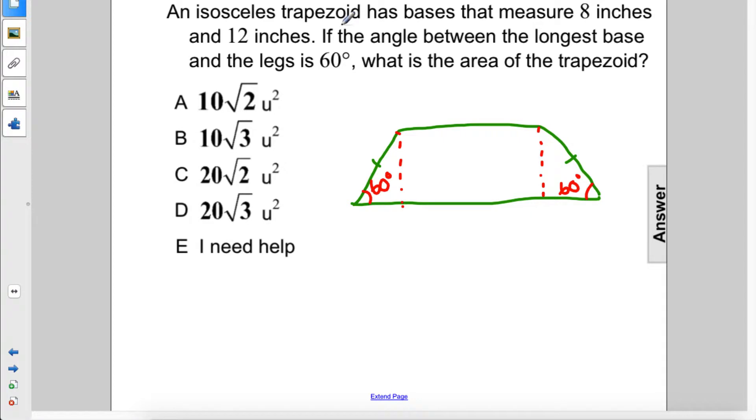Alright, so the bases are 8 and 12. This one's 8, this is 12. That makes this little piece here 2, this middle piece 8 like the top base, and this little piece 2.